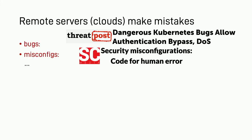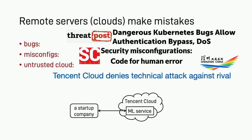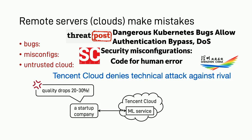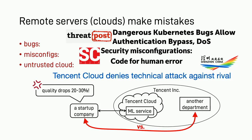Why should people care about these questions? People should care because remote servers — namely the Cloud — make mistakes. We've seen various cloud incidents that subvert the execution of a service because of bugs, misconfigurations, and unexpected failures. More importantly, cloud providers themselves might not be fully trustworthy. In 2019, there was a startup company that sued Tencent Cloud, the second largest cloud provider in mainland China, for downgrading the accuracy of their machine learning model, because another department within Tencent was competing with this startup. Unfortunately, this case is still unsettled because the startup company cannot provide concrete evidence showing that the cloud provider did misbehave.